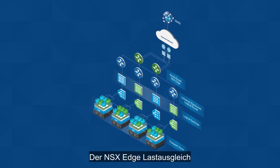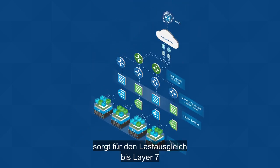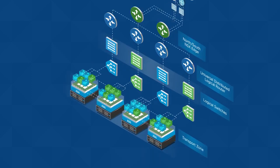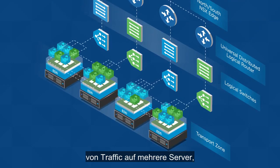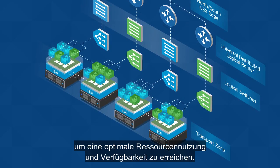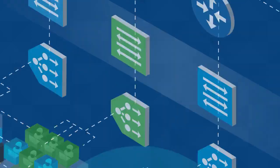The NSX edge load balancer provides load balancing services up to layer 7, allowing distribution of traffic across multiple servers to achieve optimal resource utilization and availability.